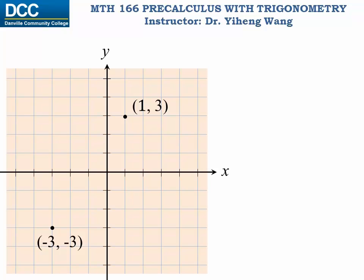On this Cartesian plane there are two points, and their respective coordinates are given. The first point is (1, 3), and the second point is (-3, -3).